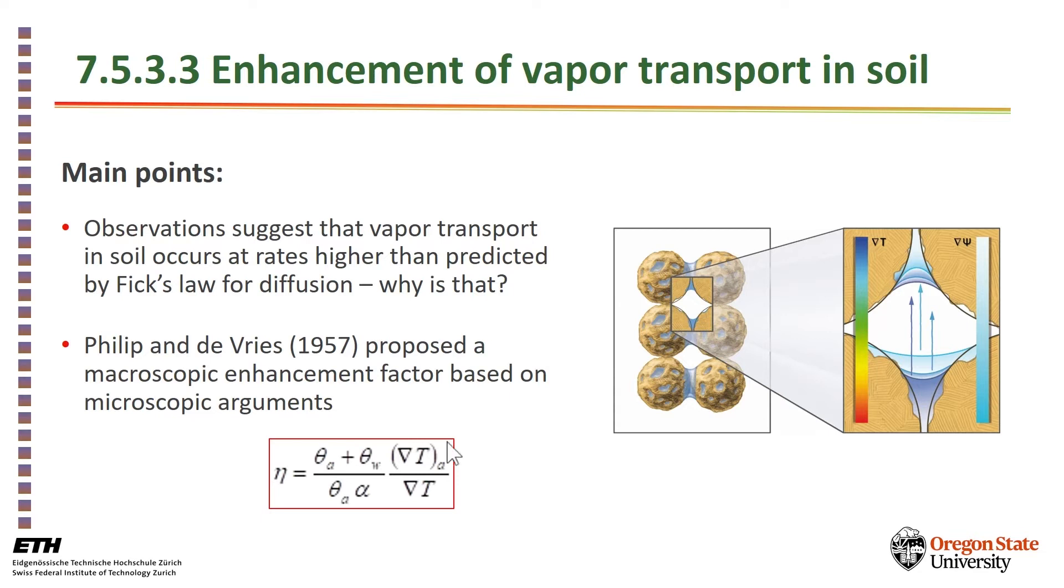This is the shape of this enhancement factor. It implies that the temperature gradient within the soil pores is different than the macroscopic gradient. And we'll come back to this in a minute.